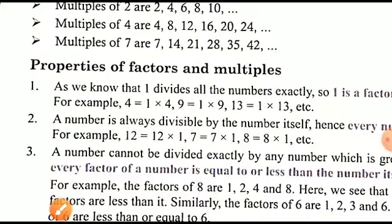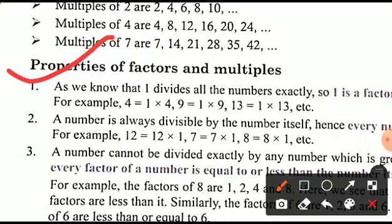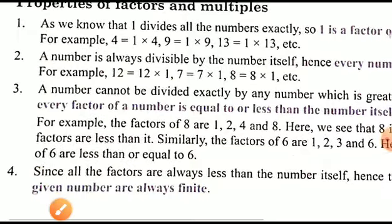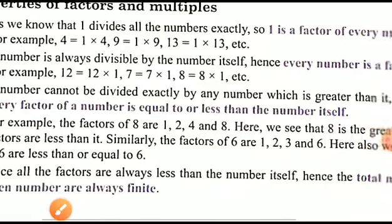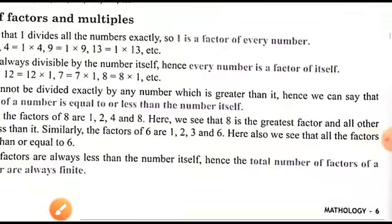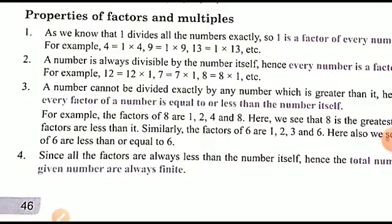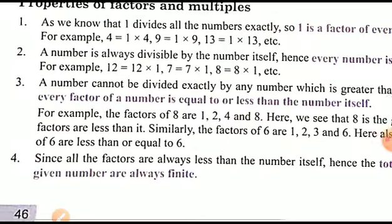Now the properties of factors and multiples. First, 1 divides all numbers exactly, so 1 is a factor of all numbers. Second, every number is divisible by itself — for example, 12 = 12 × 1 and 7 = 7 × 1. Third, a number cannot be divided exactly by any number greater than itself, so every factor of a number is less than or equal to the number itself.